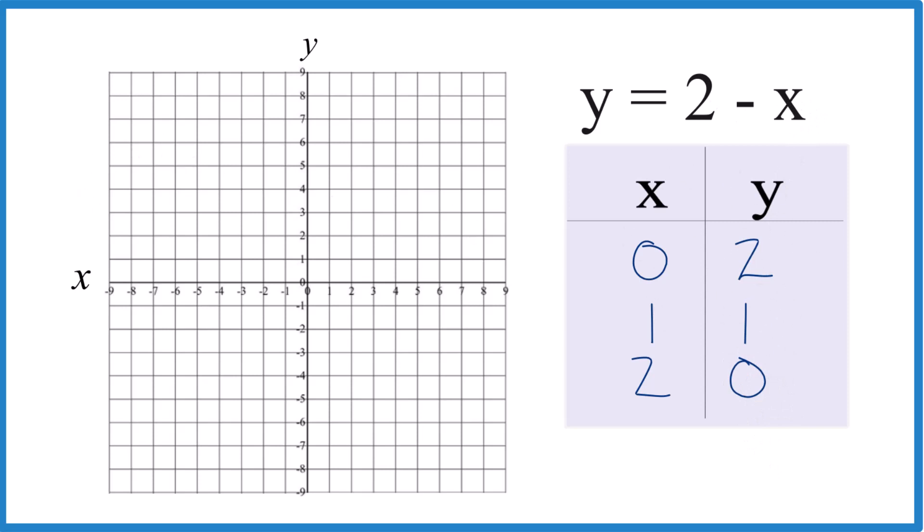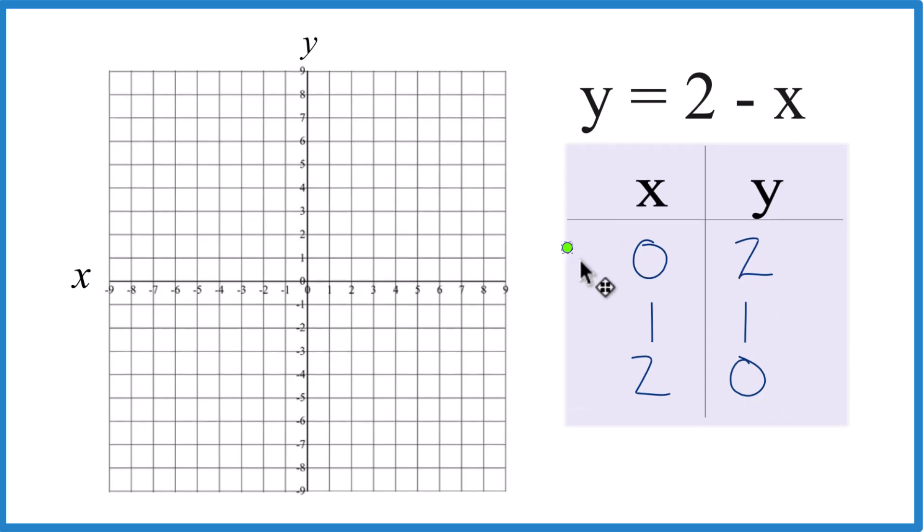So these are the points we're going to graph here. So let's see. We have x is 0, y is 2. So x is 0, y is 2, right there. We have x is 1, y is 1. x is 1, y is 1, and then x is 2, y is 0. x is 2, y is 0.